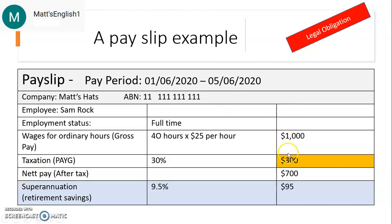This is Sam's pay, and he can check how much tax he has paid. Additionally, his company must pay him some superannuation, or retirement savings, and the rate for that is 9.5% in Australia. So he will have $95 put into his superannuation account.